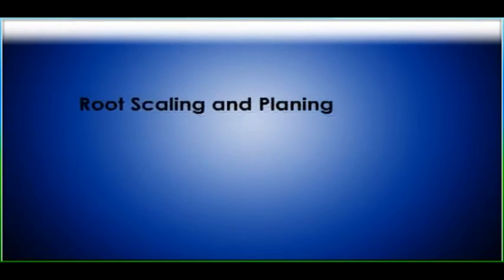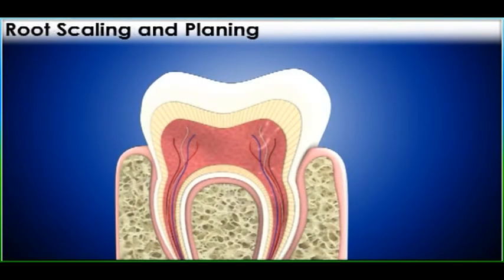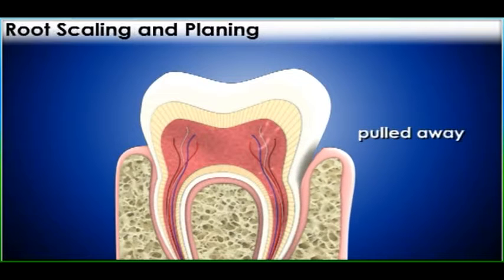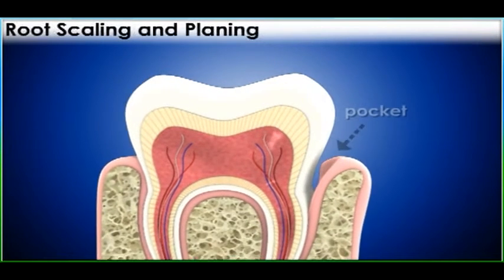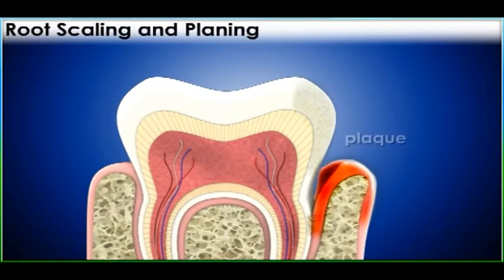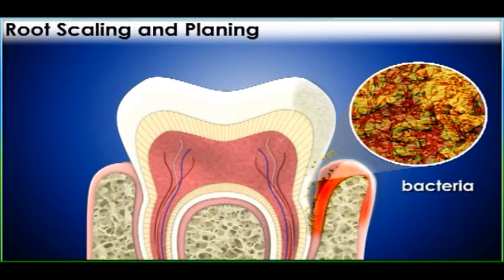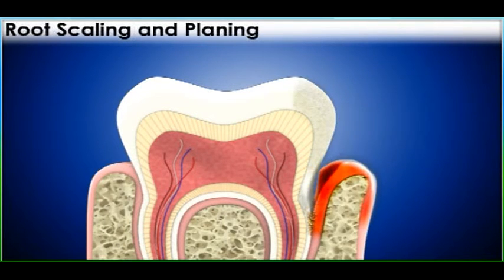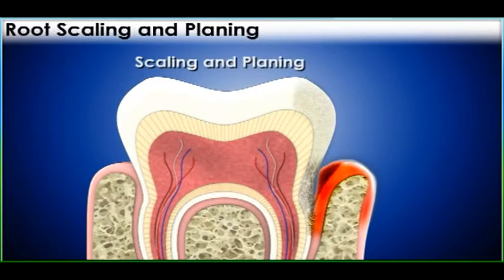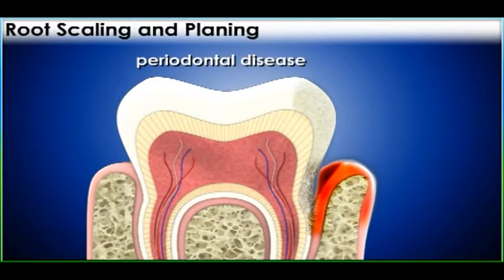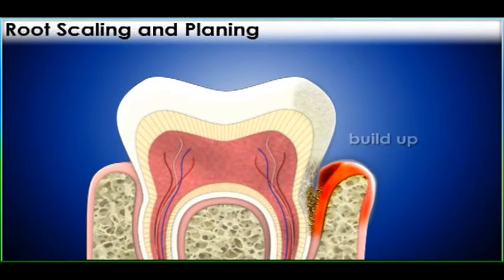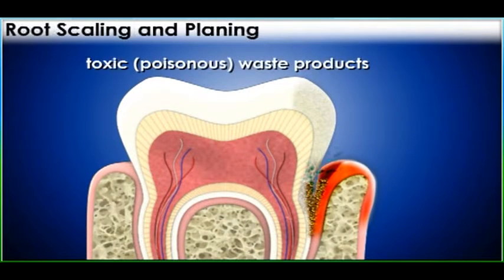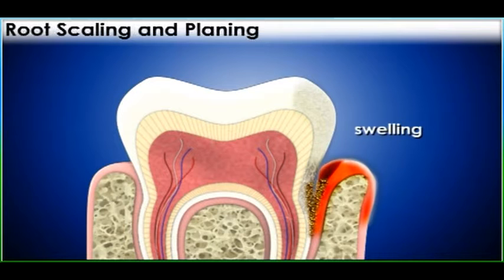Root scaling and planing: due to gingivitis, the gum tissue is pulled away from the tooth and causes a pocket which is filled with plaque and bacteria. The bone starts breaking down. The plaque continues to build up and release toxic, poisonous waste products which causes more swelling.